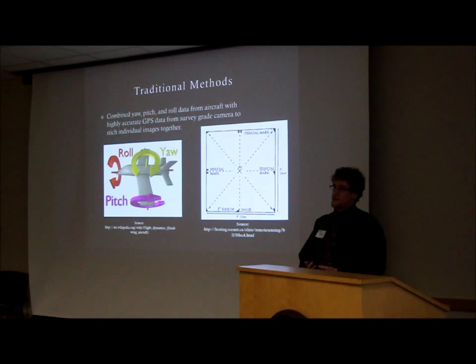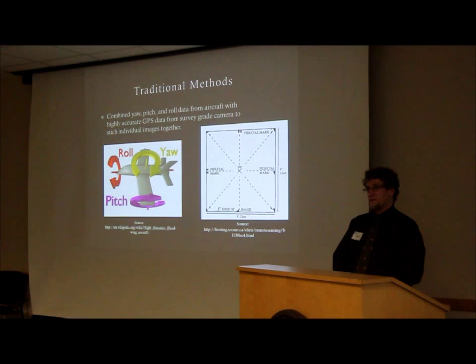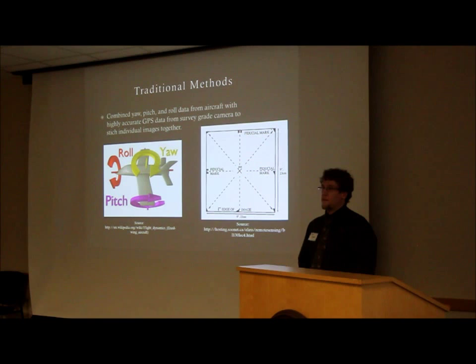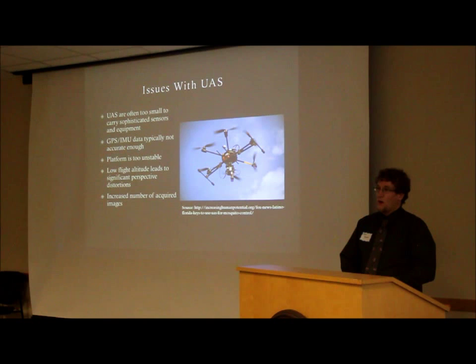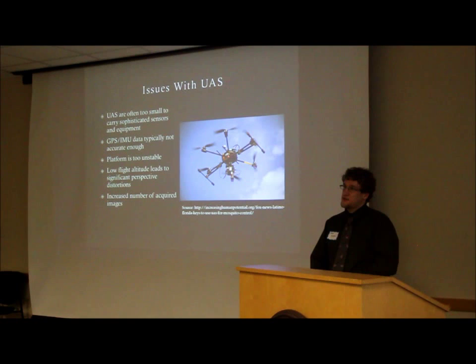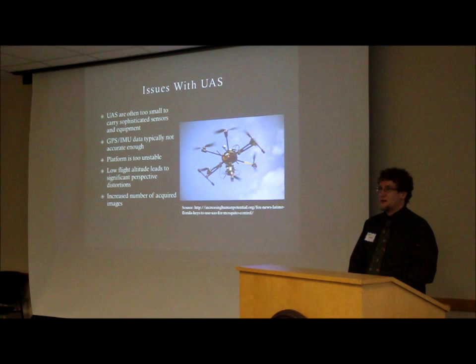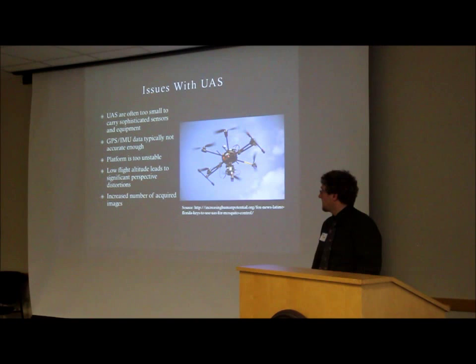With typical air photos, the airplane is flying and taking imagery. Every time an image is taken, sophisticated sensors on the aircraft measure its roll, pitch, yaw, and viewing angle, and there's a high-quality GPS. You have all that information available for every image and can stitch them together in a computer. But UAS are small — they don't have space for these sophisticated sensors, and even if they do have sensors, they're typically not as accurate. The data just isn't there to do the traditional methods.